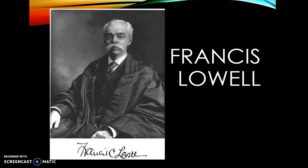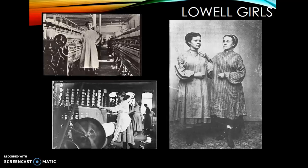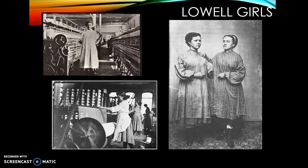Eventually the Lowell compound grows to 40 mill buildings spanning 10,000 textile mills. Lowell thinks the way to make it even more profitable is to target employees who can live at the mills and work all the time. The only type of person available and capable for that in the 1840s is young women — the Lowell girls. Most were from farming families in local communities who weren't very wealthy. Lowell would send people out to small towns to pitch the idea to families.